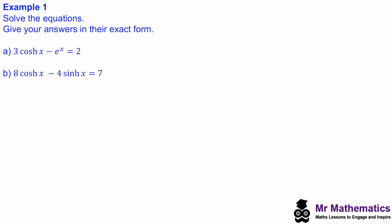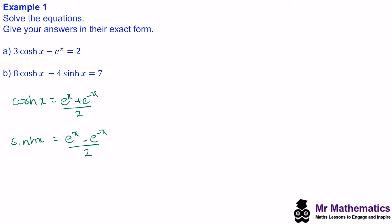In question one, we're going to rewrite each of these equations using the definition for cosh and sinh. We know cosh of x is equal to e to the x plus e to the minus x, divided by 2. And sinh of x is equal to e to the x minus e to the negative x, over 2. So we'll rewrite question a with these definitions.